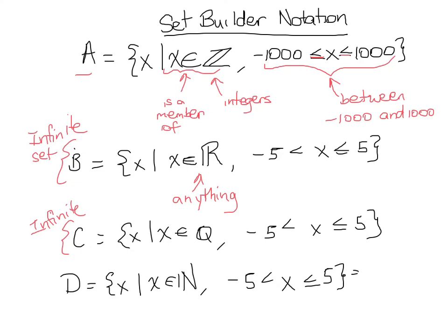So the first natural number between negative 5 and 5 would be 1, 2 would be the second, 3, 4, and does it include 5? Yes, it does because we have the or equal to sign. That's a 5, not a 6, so let me rewrite that to make sure it's clear.